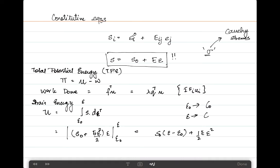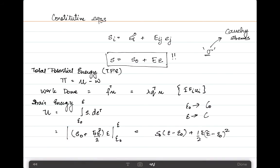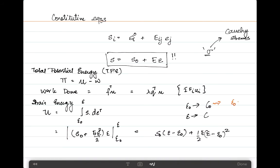We know that in the current configuration here, epsilon naught is equal to zero—there's no strain in the system. Therefore, we can write the final expression as S naught epsilon plus half E epsilon squared.